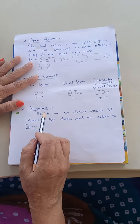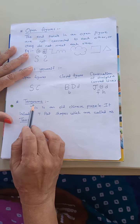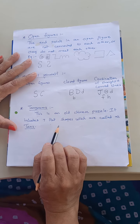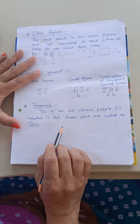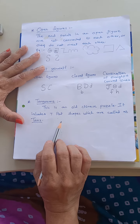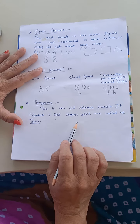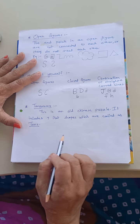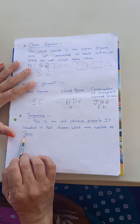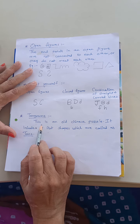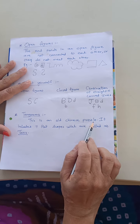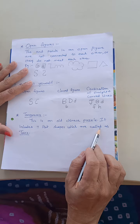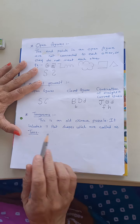Now we will go to the next subtopic and that is tangrams. I think you were able to do the activity where you had to create a figure out of the tans. Tangram is an old Chinese puzzle. It includes seven flat shapes which are called as tans.